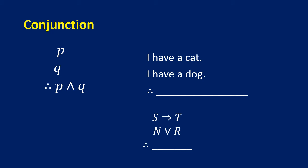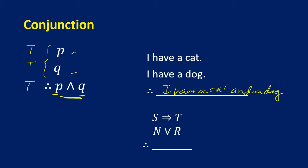The conjunction rule works in the opposite direction: if you have two separate true premises P and Q, you can conjoin them and conclude P and Q. For example: Premise 1 — 'I have a cat.' Premise 2 — 'I have a dog.' Conclusion: 'I have a cat and a dog.' Another example: from premises 'S implies T' and 'N or R,' the conclusion is 'S implies T and N or R.'